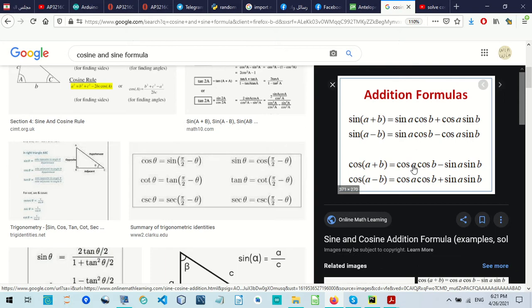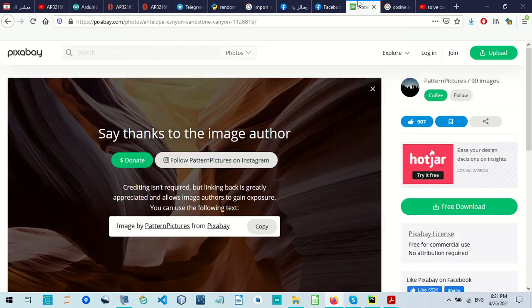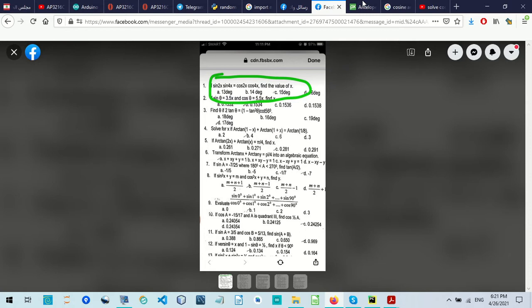Here a is the angle, b is an angle, so a corresponds to 2x and b corresponds to 4x. We start by cosine, so cosine 2x cosine 4x. Now we take this quantity sin(2x)sin(4x) to the right side.